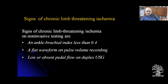Signs of chronic limb-threatening ischemia on non-invasive testing include: ankle brachial index less than 0.4; a flat waveform on pulse volume recording; and low or absent pedal pulses on ultrasound Doppler or Doppler scan.